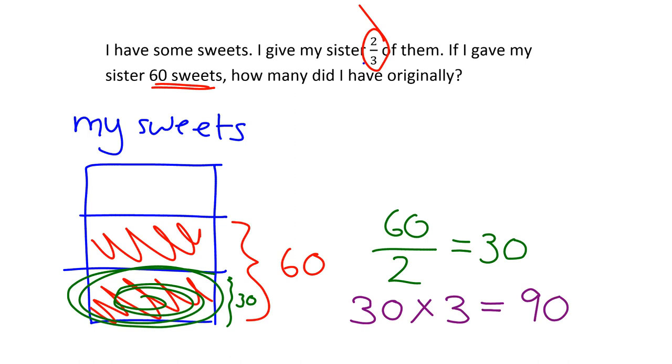So you can see quite easily that if the two pieces is 60, then this is 30, and then the three pieces will be 30, 60, 90. So the answer is, I had 90 sweets originally.